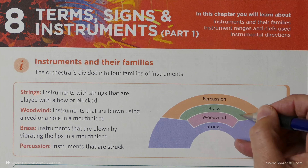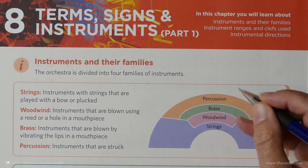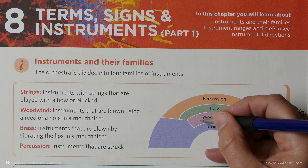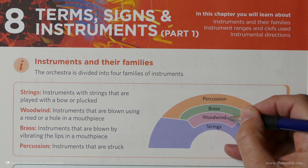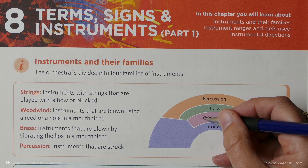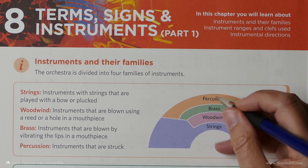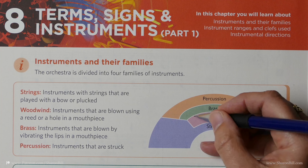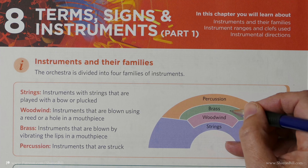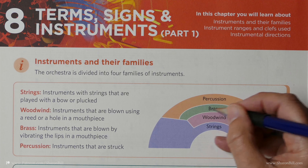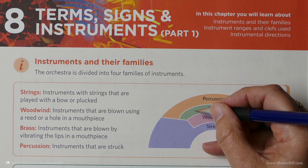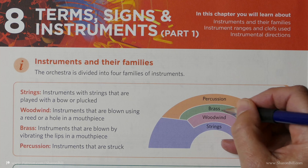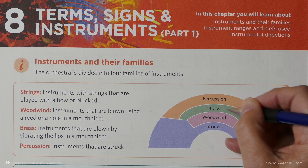We've got the brass instruments here, and these categories can be divided as well because the woodwind instruments are classed into reed instruments, non-reed instruments, and also some instruments have double reeds. And then in the brass section we have valved brass instruments such as the trumpet or the horn, and then we've got slider instruments such as the trombone.